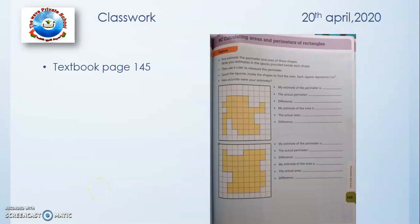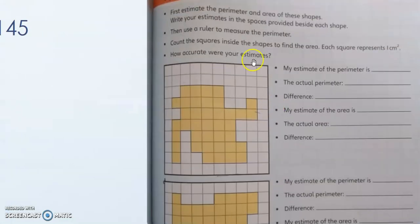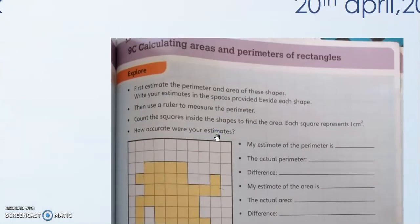So grade 5, this is video number 5, part 3. This work is for 20 April 2020. This is page number 145. In this page, the topic is 9C, calculating areas and perimeters of rectangles.